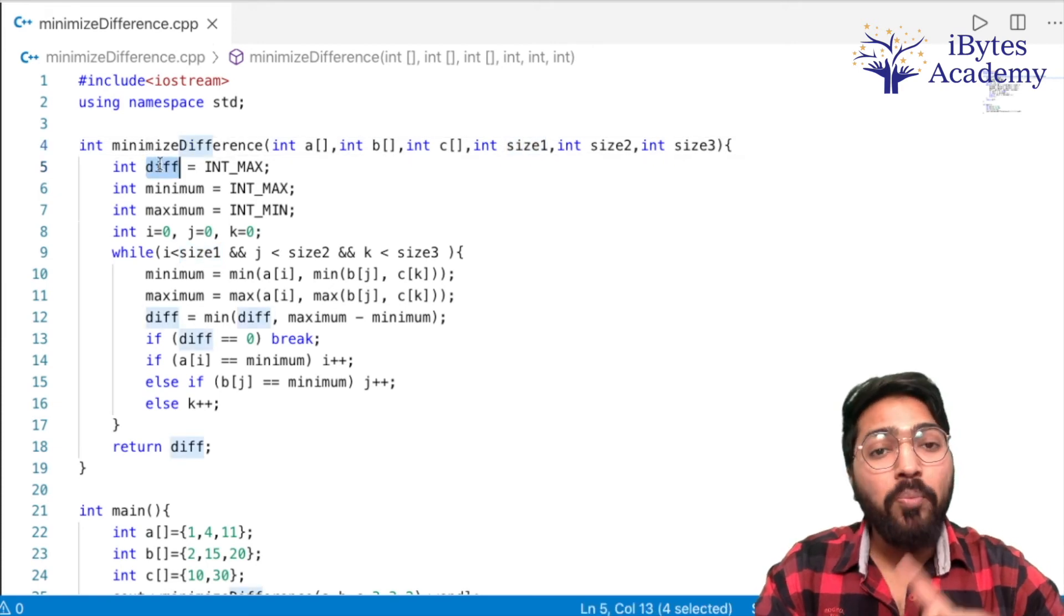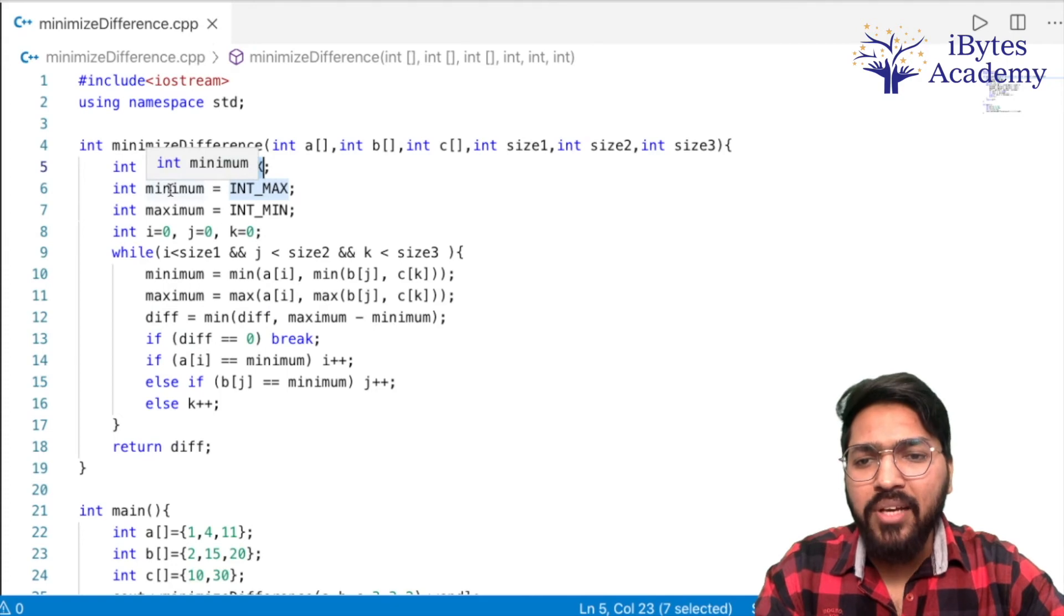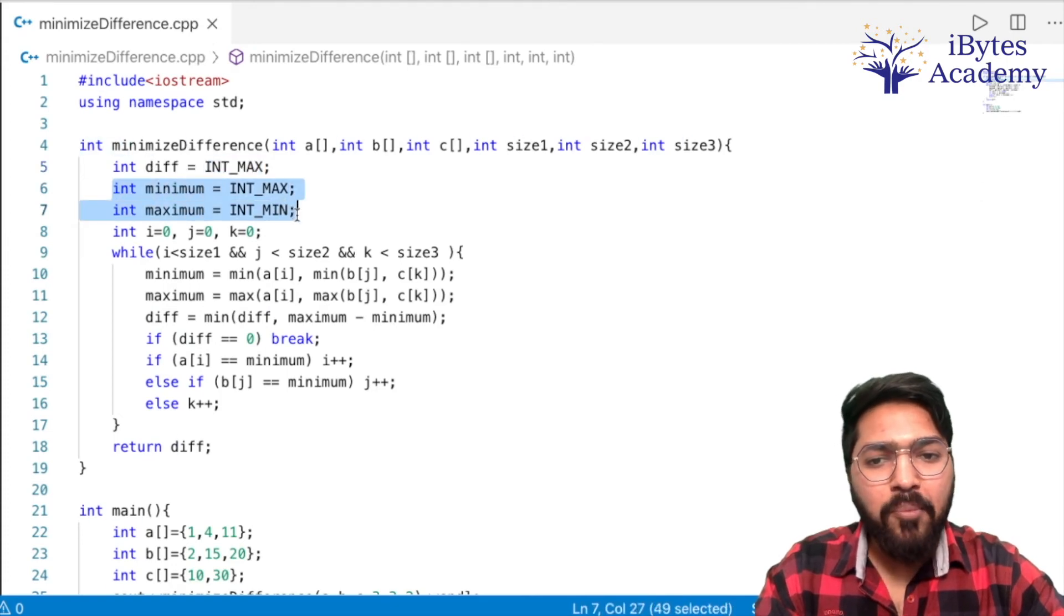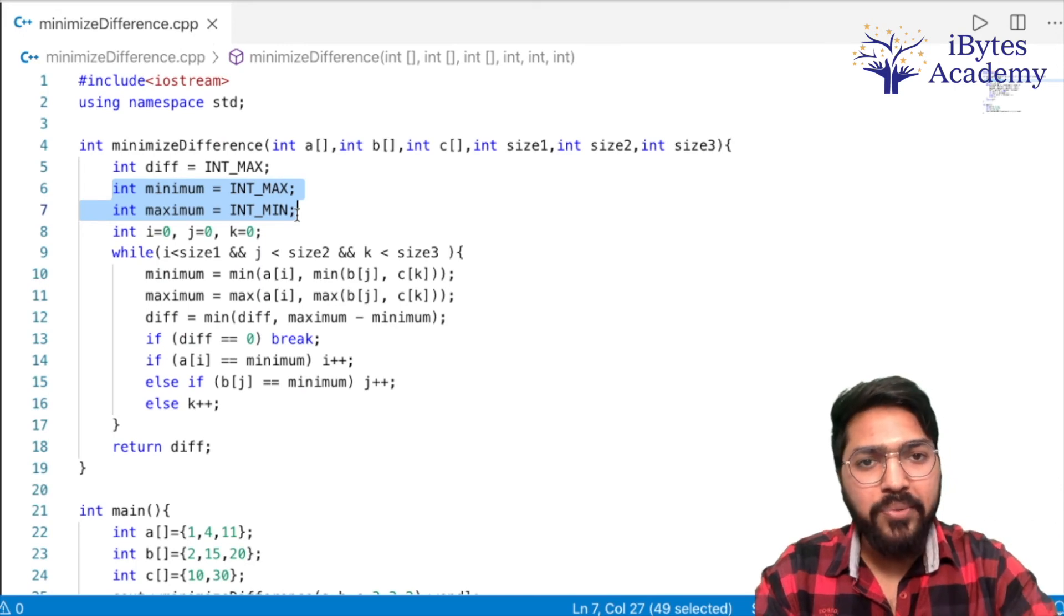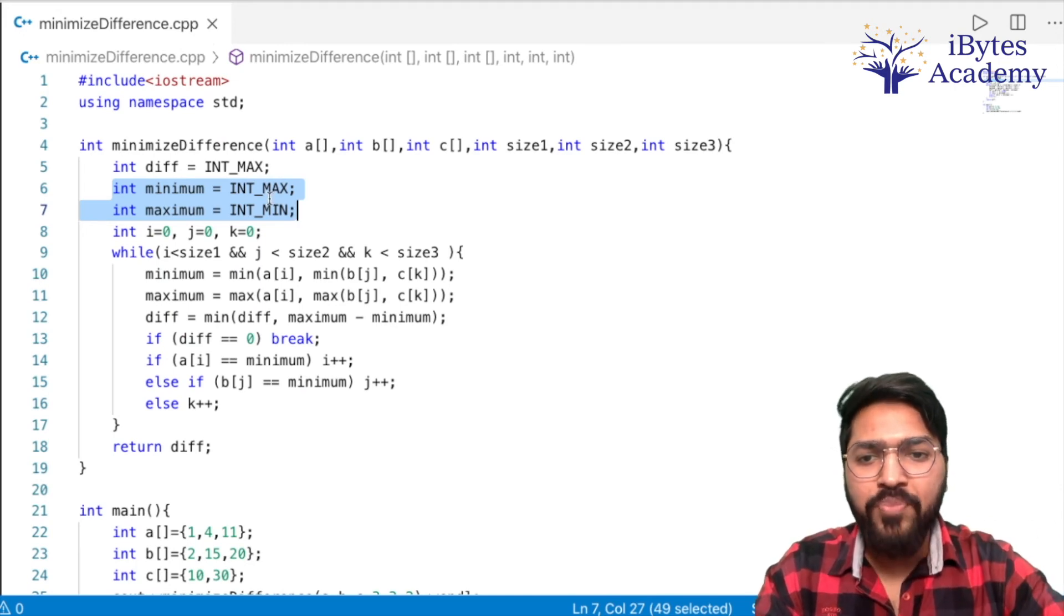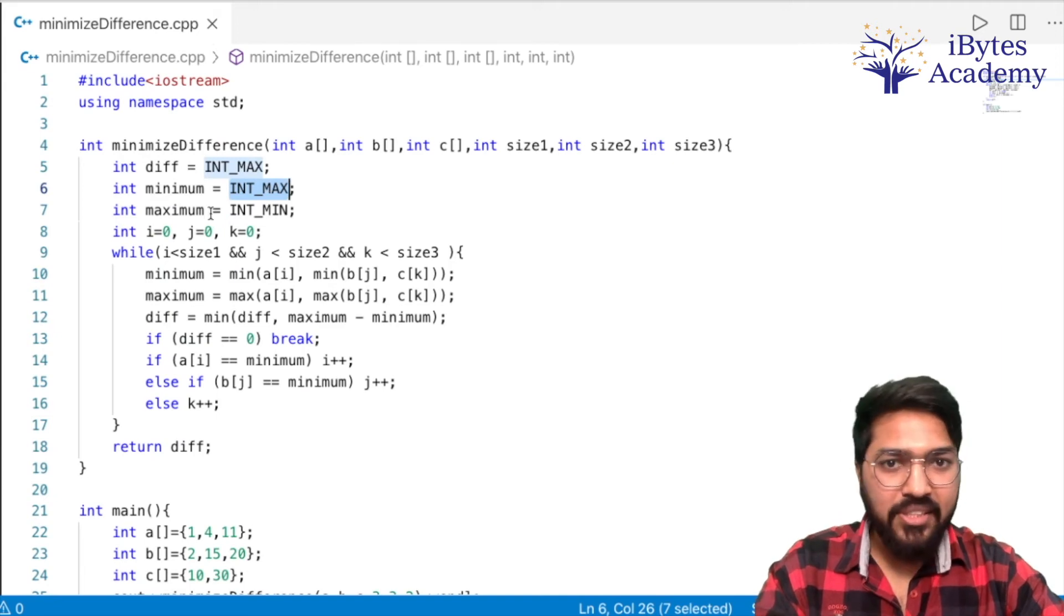Then we have a diff variable, which I was calling the output variable. Initialize it with INT_MAX. And similarly we have two more variables: minimum and maximum. Like for every triplet we have to find the minimum and maximum. So for that we need two variables. Minimum is initialized with INT_MAX, maximum is initialized with INT_MIN.